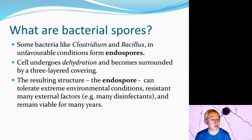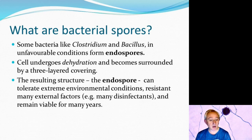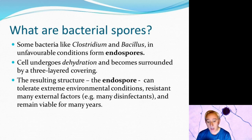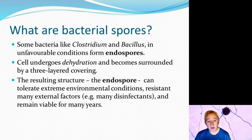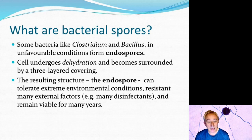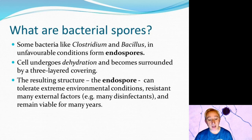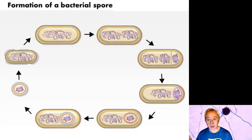The endospore is also resistant to desiccation, to most forms of temperature unless we get up to really high temperatures, starvation to a degree, ultraviolet light, gamma radiation up to a certain tolerance level, and chemical disinfectants. Another interesting thing is that these spores can remain dormant for many years.